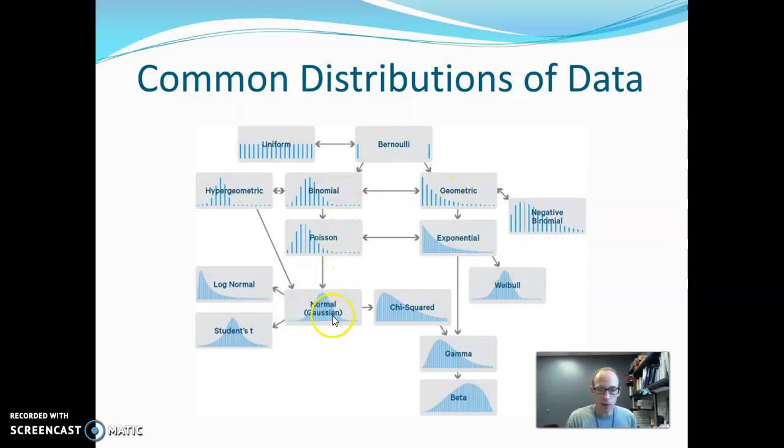And then the one we're going to really talk about today is the normal distribution, also called the Gaussian distribution. It's basically the bell-shaped curve where you have a lot of data in the middle and then it equally goes out in each direction. It does show up quite a bit, but be aware there are also lots of other distributions too. It's not the case that all data is normally distributed.